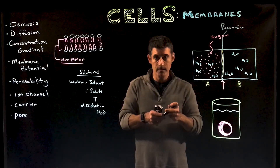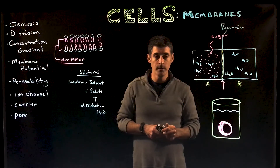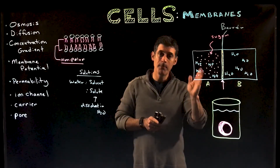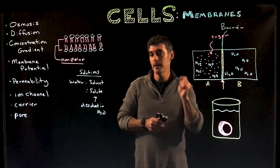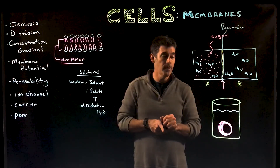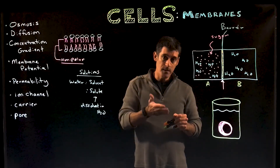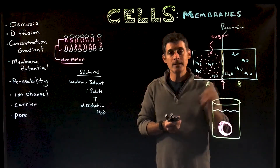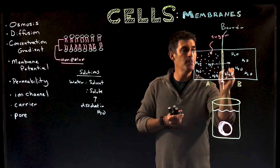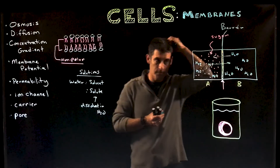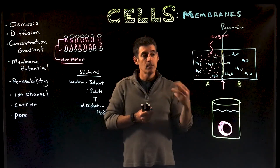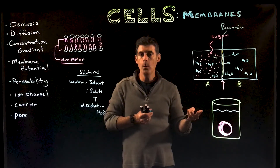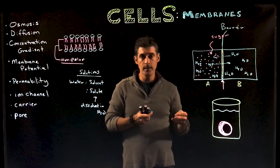Whether the membrane allows water molecules or solute molecules to easily move across depends on a number of things. If we only have a phospholipid bilayer — not talking about proteins yet — what we see is that water molecules can easily move back and forth across the membrane in either direction. The first question might be: do they tend to move more in any one direction?